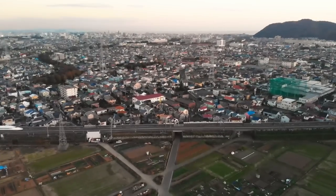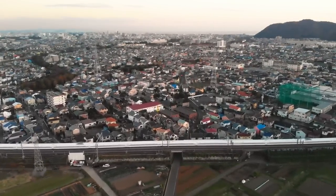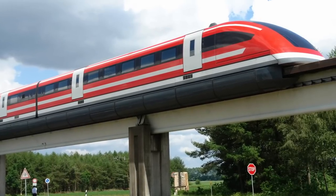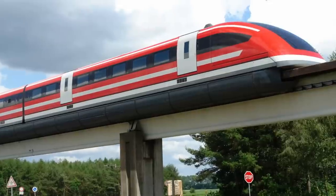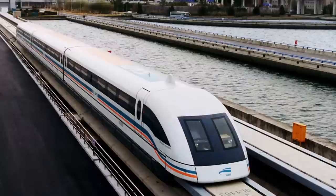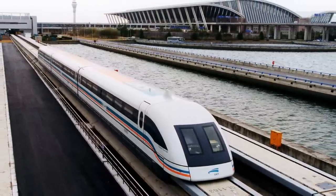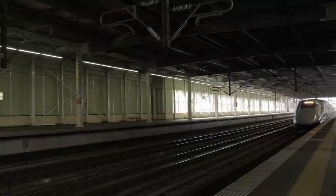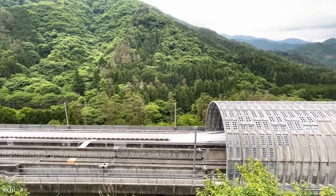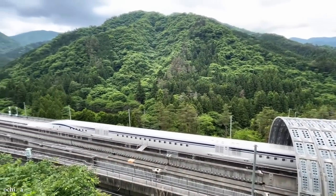The train levitates above the tracks, eliminating the need for wheels or conventional rail systems. The core of this technology lies in powerful magnets embedded in both the train and the guideway. The maglev train's guideway, or track, is equipped with a series of electromagnetic coils that generate a magnetic field. Similarly, the train itself contains magnets that produce a magnetic field of opposite polarity. As the train approaches these coils, the interaction between these magnetic fields results in a repulsive force lifting the train off the ground. This phenomenon allows the train to float above the track, supported only by magnetic forces.